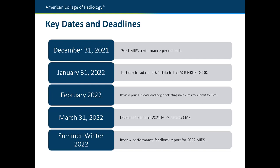All through February, you can review your TIN data, look at your performance, figure out what measures you want to submit, and what improvement activities you want to submit. All the way through March 31st, you've got that time to finalize your submission. March 31st at 8 p.m. Eastern time is the absolute deadline to submit 2021 MIPS data. CMS will not accept any submissions after that point. After March 31st, that brings us into the 2022 performance year.